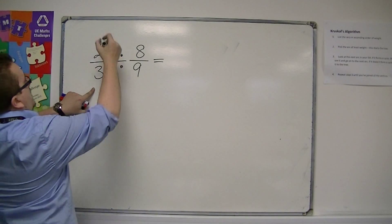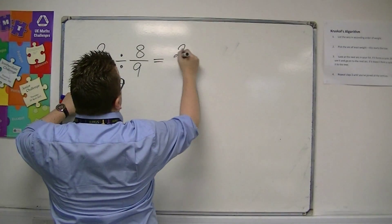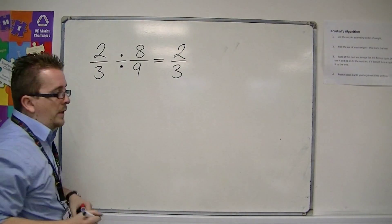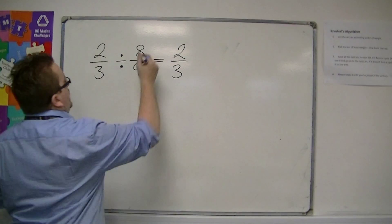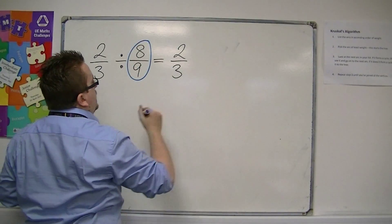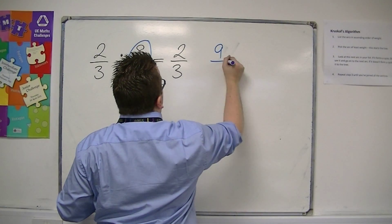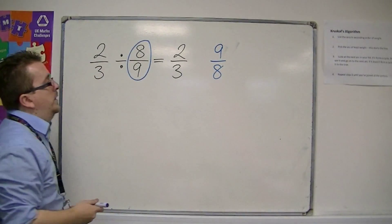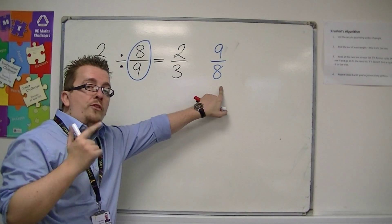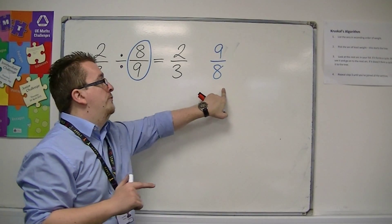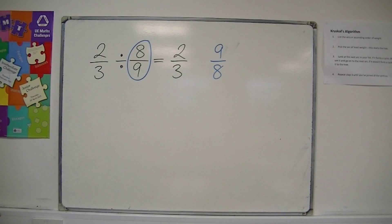The left-hand fraction remains the same. The right-hand fraction flips upside down. So, we actually get what is called the reciprocal of a fraction. So, 9/8 is the reciprocal.